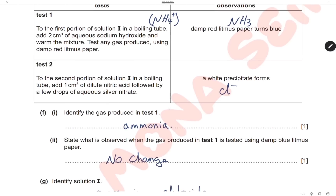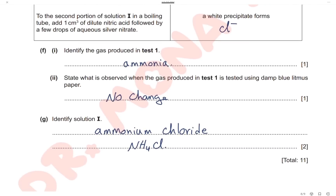Identify the gas formed in test 1: the gas is ammonia. State what is observed when the gas produced in test 1 is tested using damp blue litmus paper: there will be no change — the blue litmus paper remains blue, since ammonia is already alkaline. Solution I is ammonium chloride, containing ammonium ion and chloride ion.